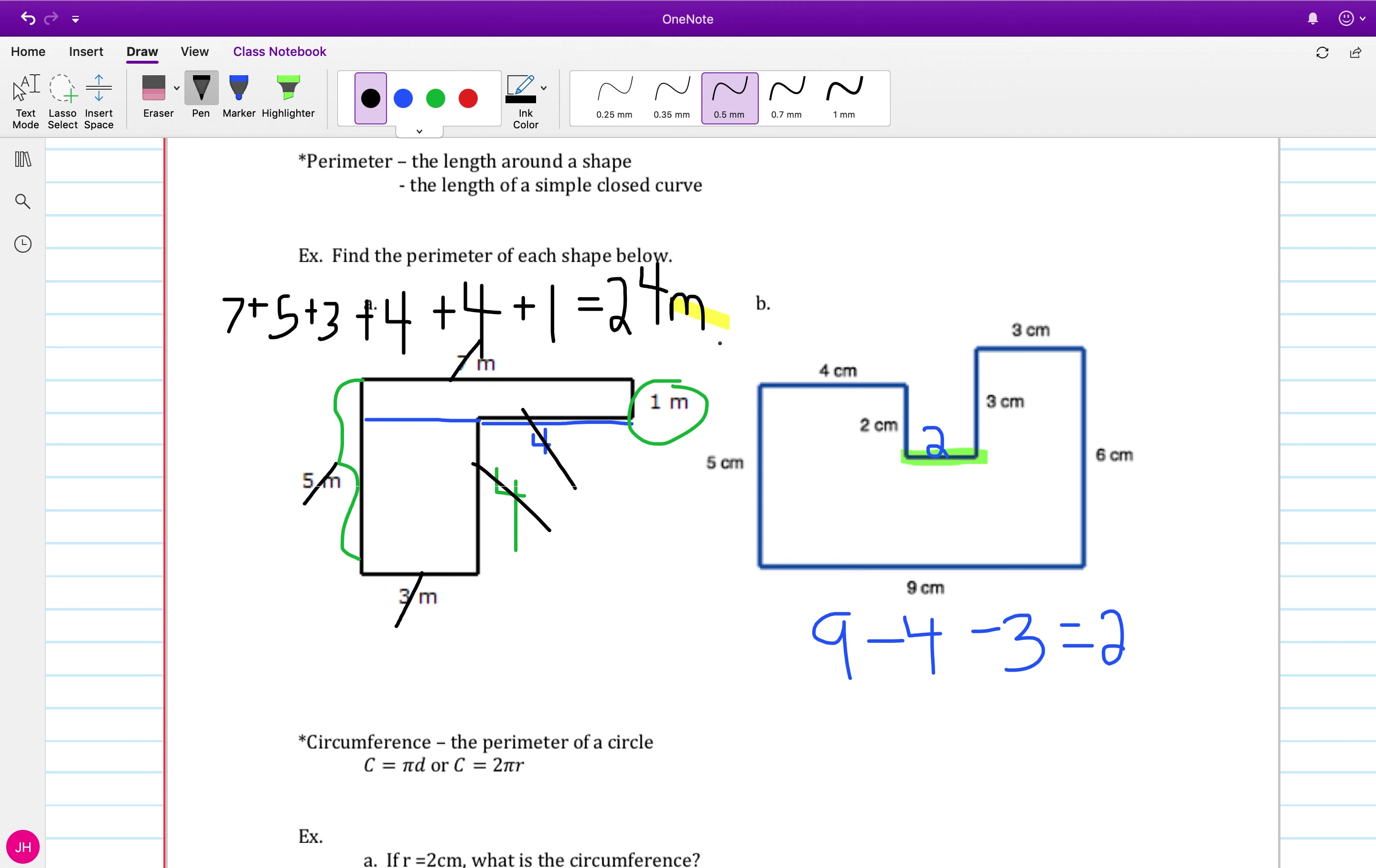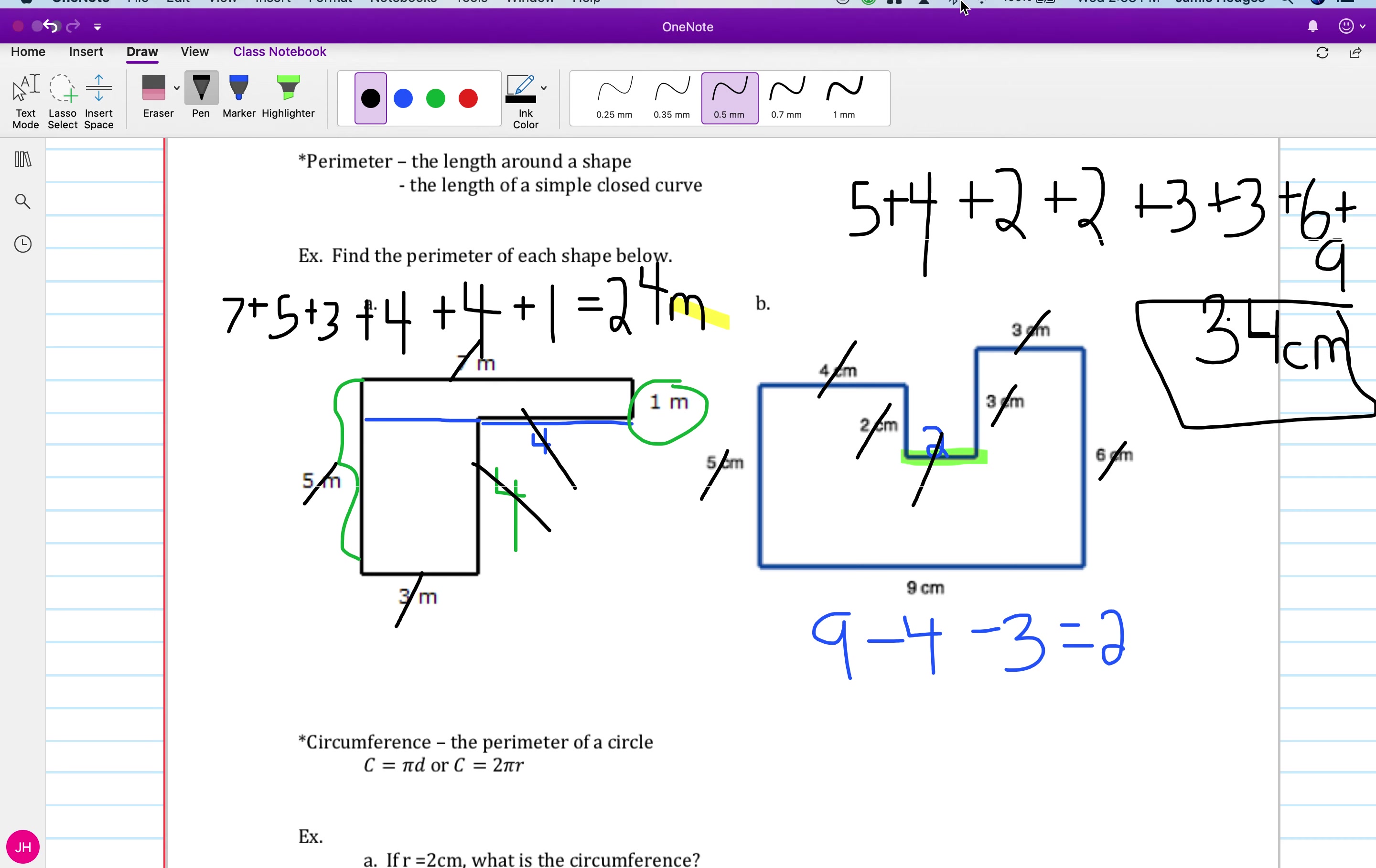Then I'm going to come through and I'm going to add up everything that's in the perimeter. So five plus four plus two plus another two plus three and another three. Plus six. And then plus nine. If I add those all up, I'm going to get 34. And then my units is going to be centimeters. So my answer, my whole answer, you have to include the units for our final answer is 34 centimeters.